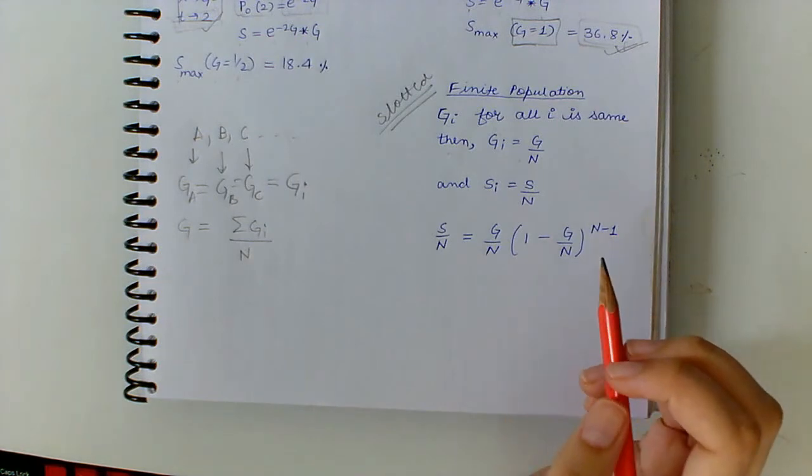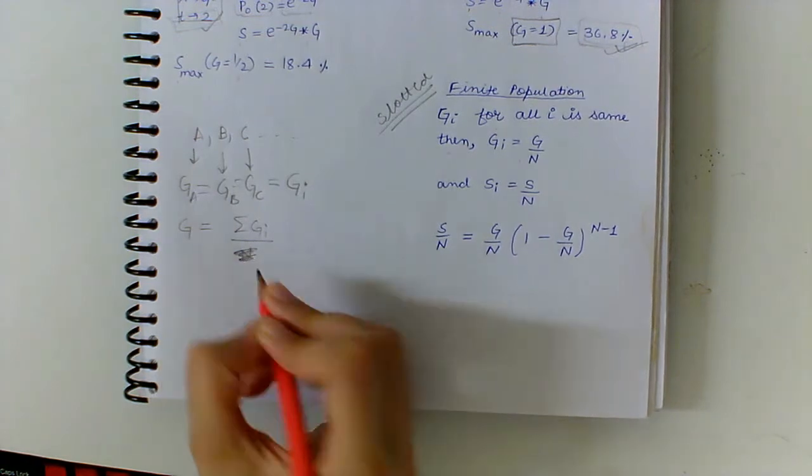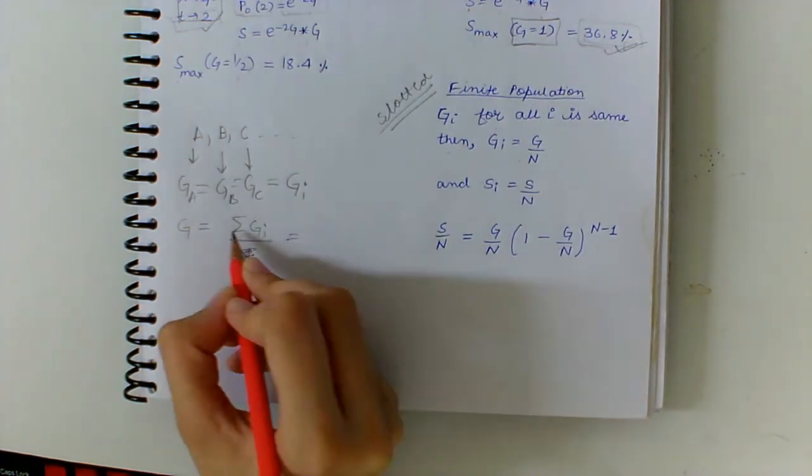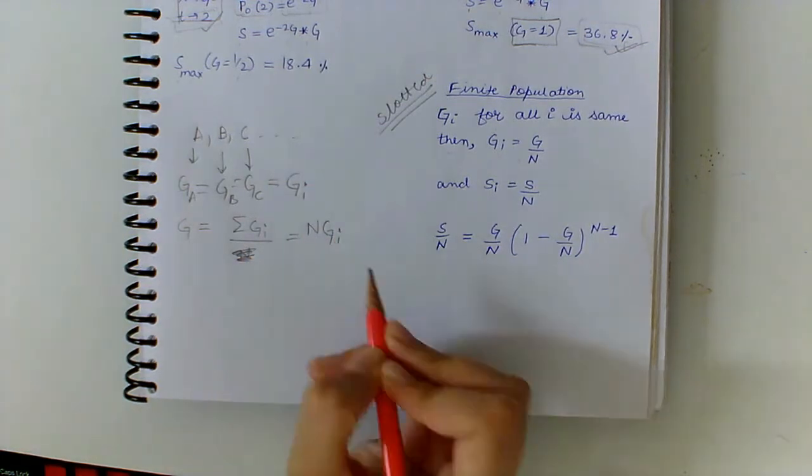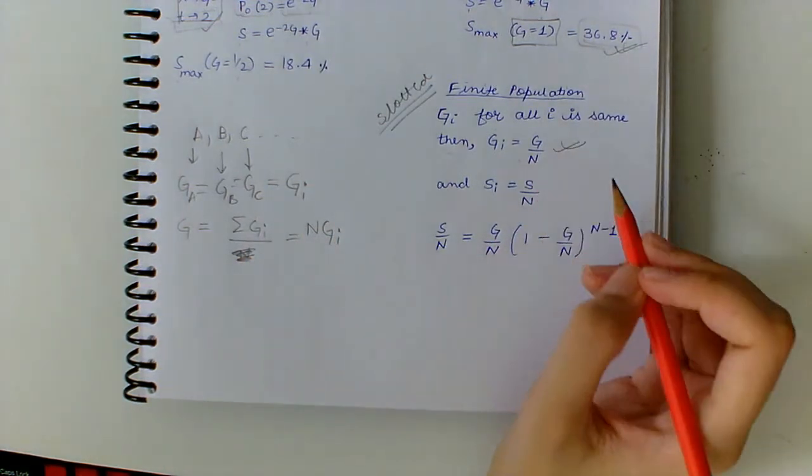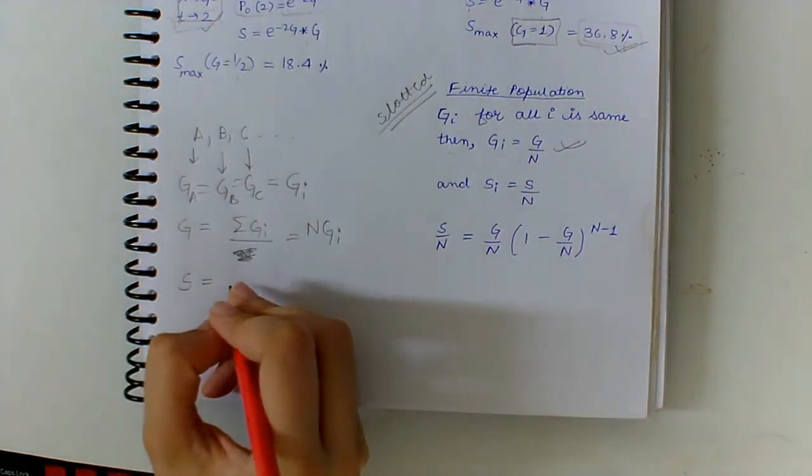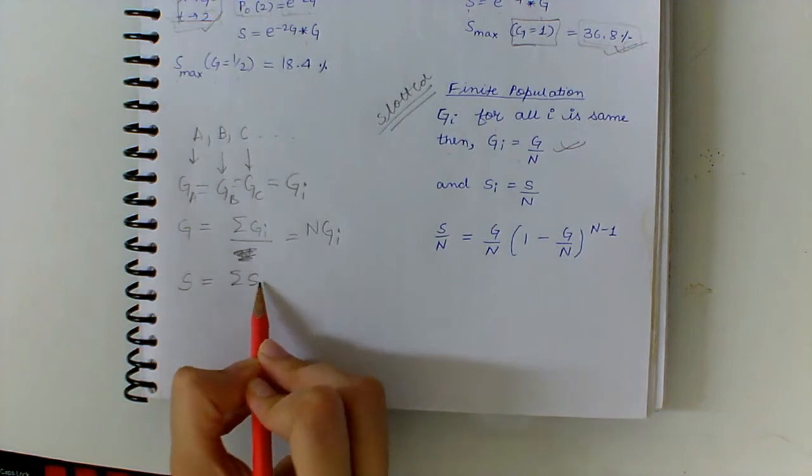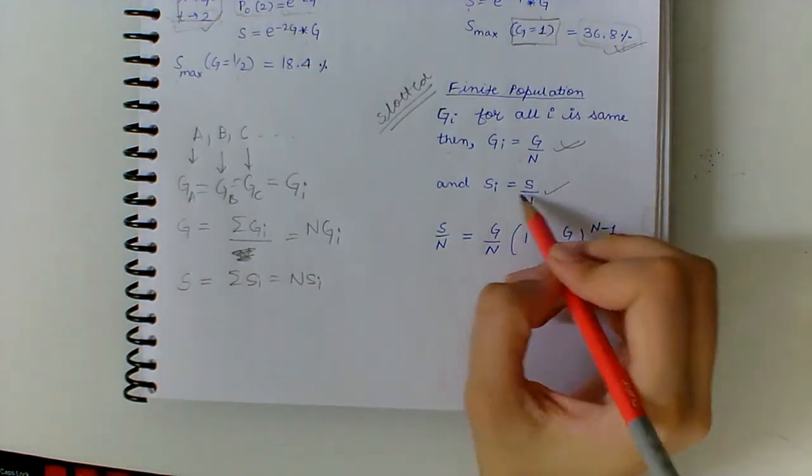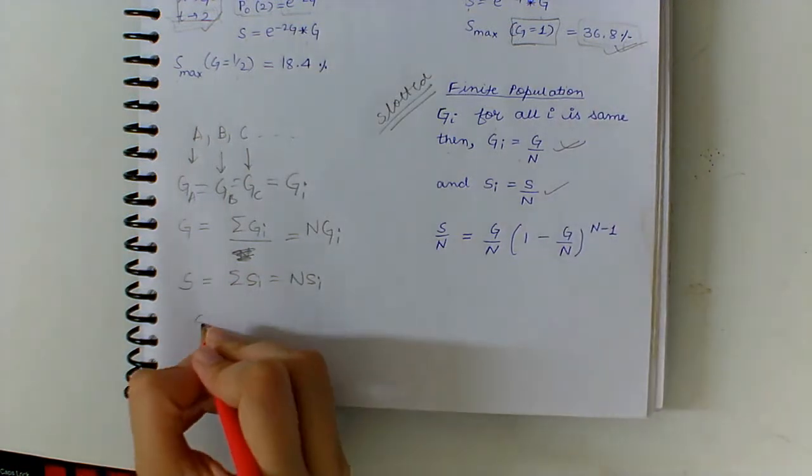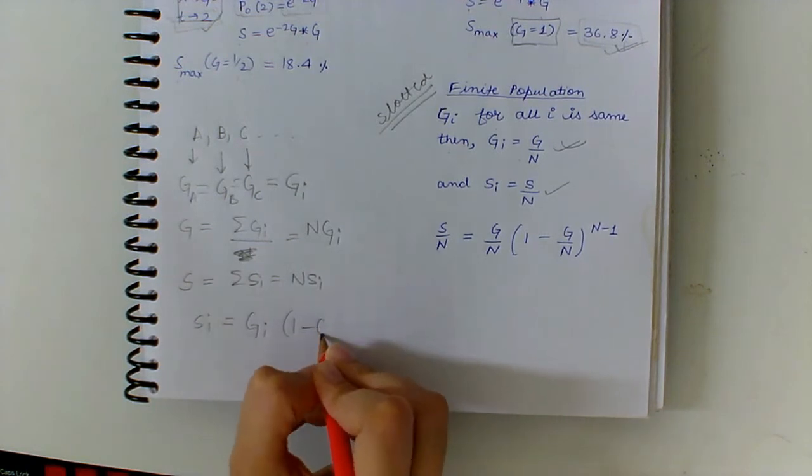And G, that is the total, is summation of gi divided by n. As gi are all equal, we get n times gi, so the value of gi becomes G/n. Similarly, the value of S is summation of si, that is n times si, so we get si equal to S/n.